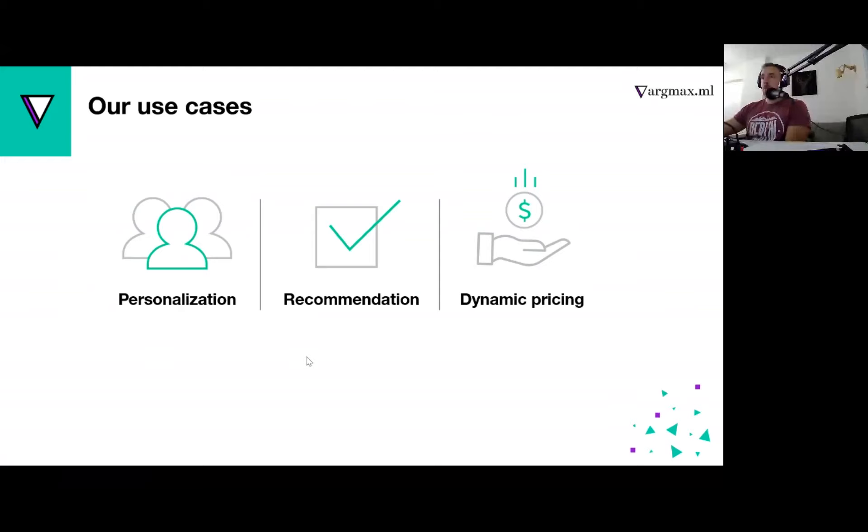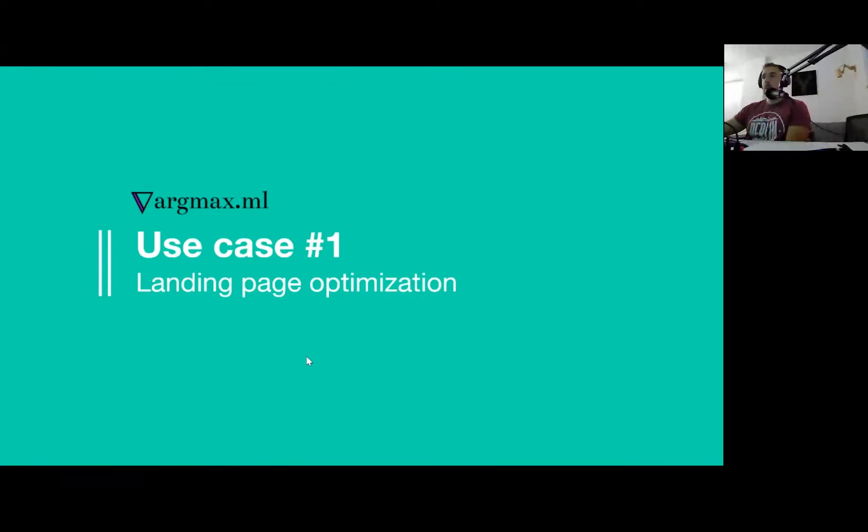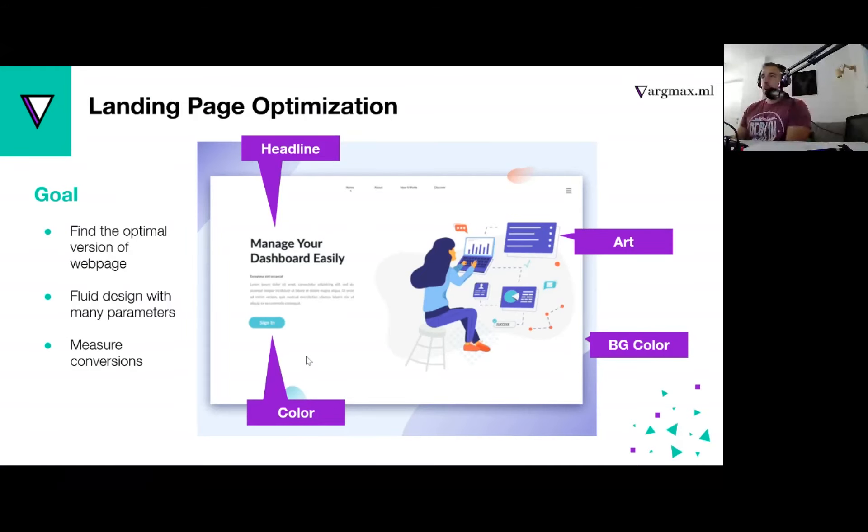Some example use cases. The first use case we'll cover is essentially optimizing a landing page. A generic landing page would look something like that. You have a tagline, a call to action button. You can control the colors, the background color, the colors of the text and sizes. Usually you have some kind of hero image or a figure. This could be an influencer, depending on your industry, or any other art.